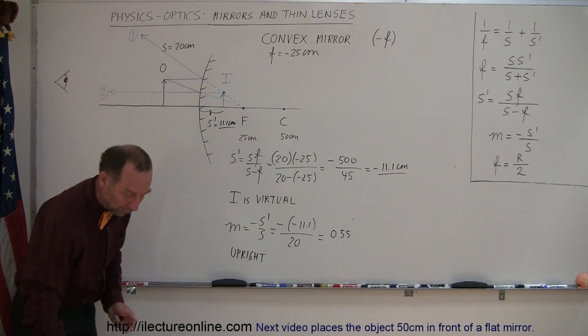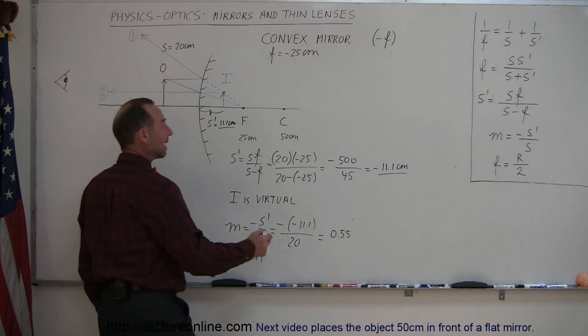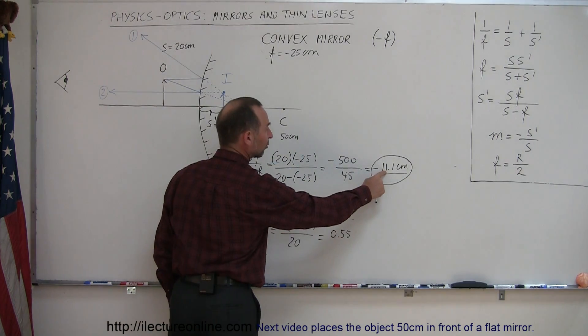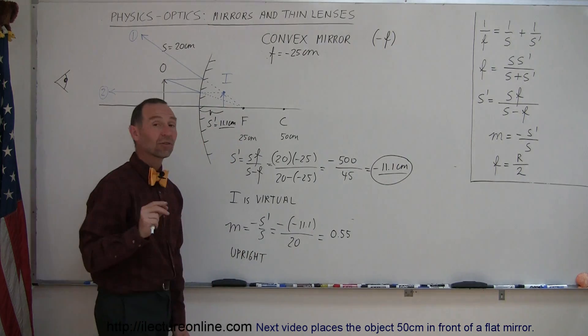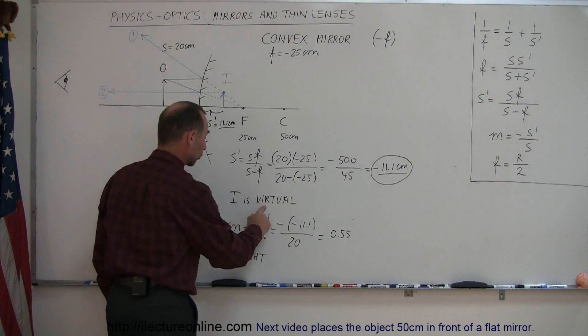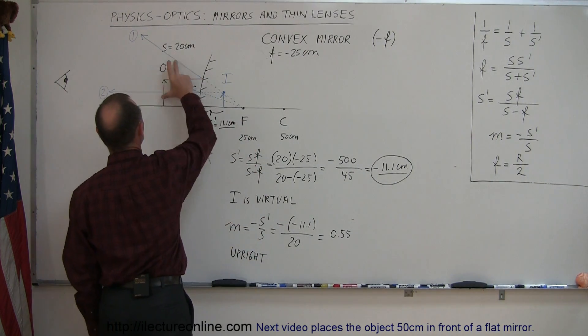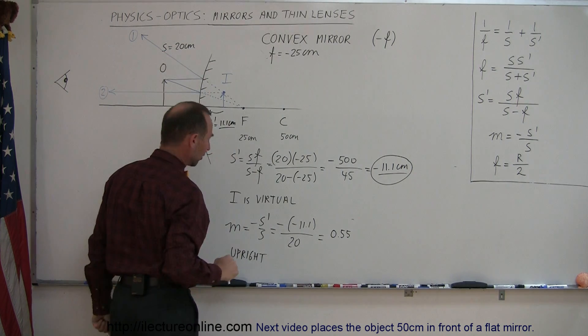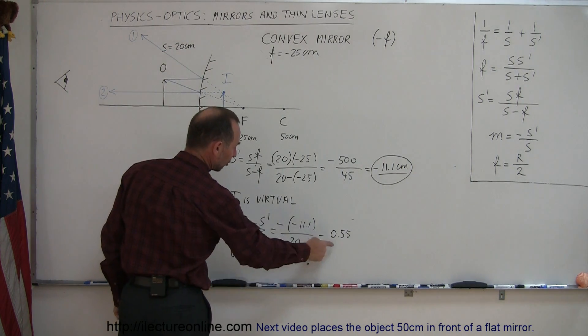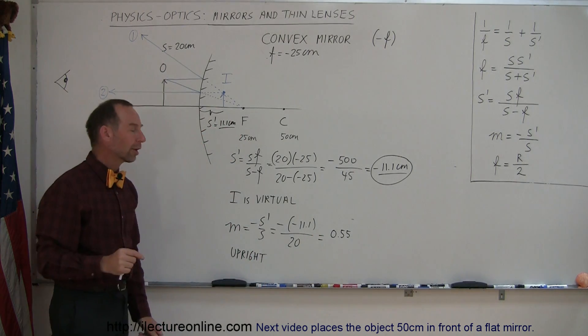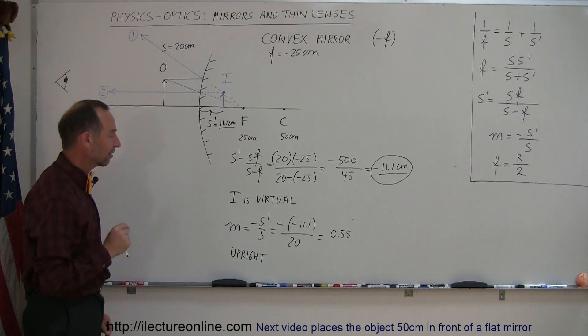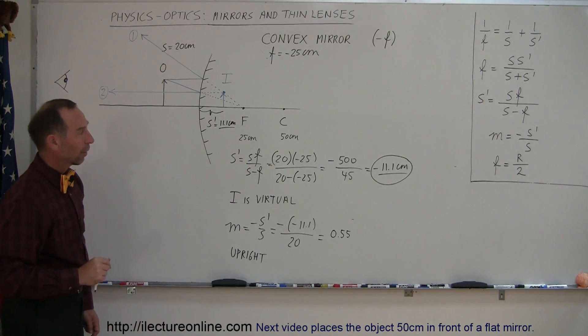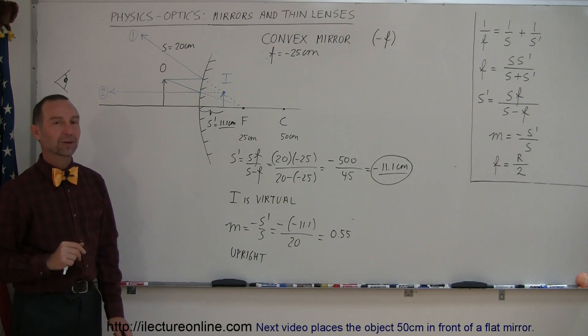All right, those are the four answers. We found the location of the image, the S prime, 11.1 centimeters behind the mirror. That's what the negative means. Since it's negative, that means that the image is virtual, not real. We can see that from the diagram that the rays do not converge. They appear to be coming from back here somewhere. The magnification shows us that it's slightly more than 50% of the original object in size. And since it's positive magnification, the object is, or the image is upright. And that's how you work with convex mirrors.